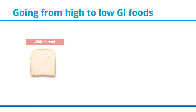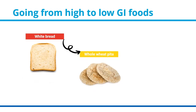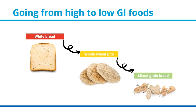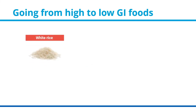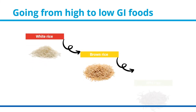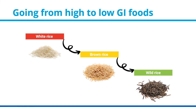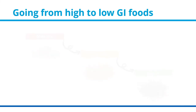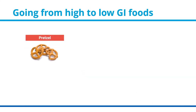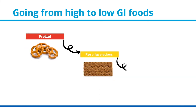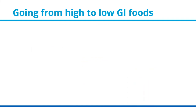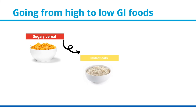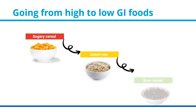Instead of white bread, try a whole wheat pita or mixed grain bread. Instead of white rice, try brown rice or wild rice. Instead of pretzels, try rye crisp crackers or popcorn. And instead of sugary cereal, try instant oatmeal or a bran cereal.